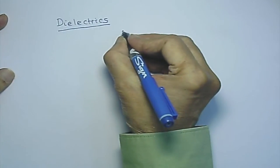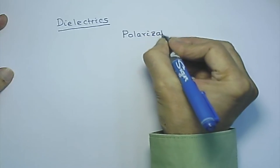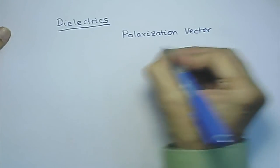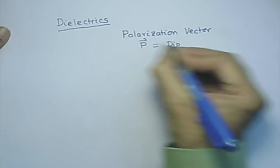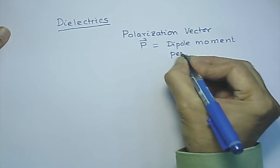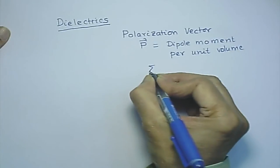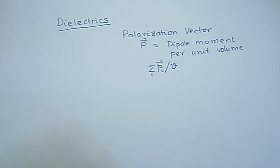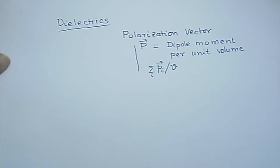What we did is to define what we called the polarization vector. The polarization vector was defined as essentially the dipole moment per unit volume, denoted as vector P. That is the sum over i of p_i for an assembly in a volume, divided by the volume. We proved this by looking at the potential expansion up to the dipole terms.